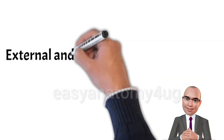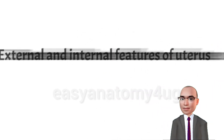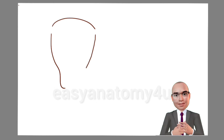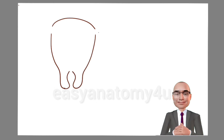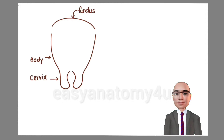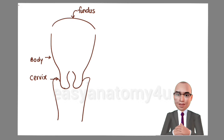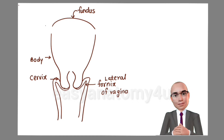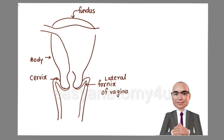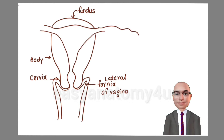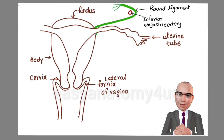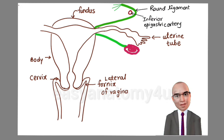Let's draw a diagram to show the external and internal features of the uterus. Begin with the fundus, lateral walls of the body, and cervix. Show the cervical canal. Draw the vagina and show the lateral fornix of the vagina around the vaginal part of the cervix. Draw the cavity of the body of the uterus. Also draw the fallopian tube. Draw the round ligament of the uterus anterior to the fallopian tube.